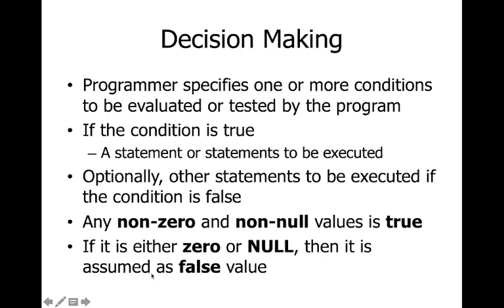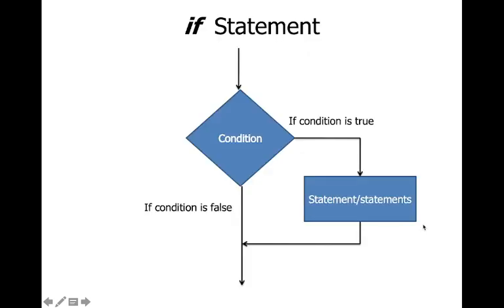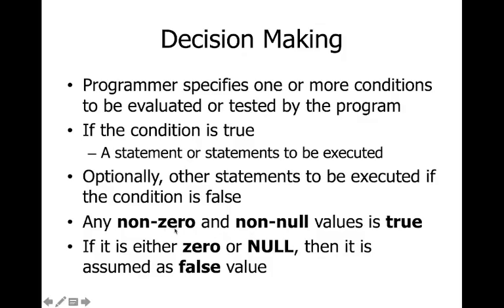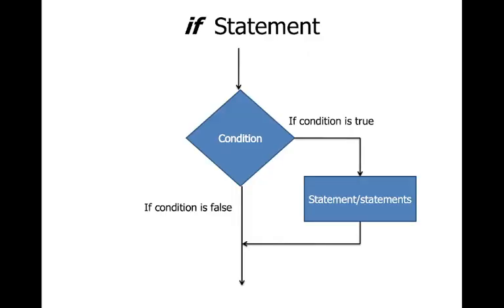If the value is either zero or NULL, it is assumed as false. In C, true is not just one — any non-zero value such as five, six, or seven is true. If it is zero or NULL, it is false. Zero means the digit zero.